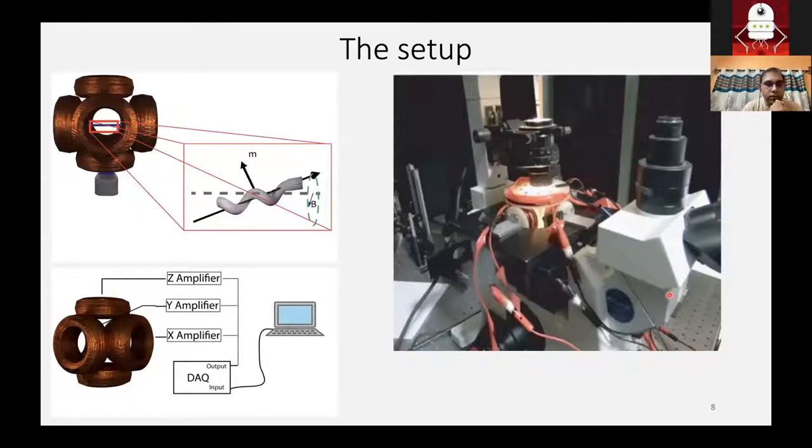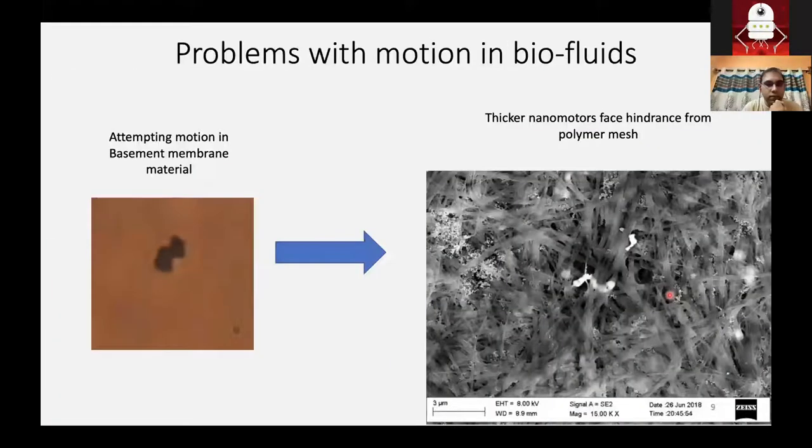With this, when we try to move nanorobots in biofluids, we face a problem. Most biofluids have a polymer mesh and our nanomotors are not very good at traversing this polymer mesh. Here's a video of a nanomotor trying to move through a basement membrane material, which I'll come to in a couple of slides. And over here is an SEM of what happens when you try to move nanorobots through collagen. It gets entangled in the mesh like an insect in a spider web, and it doesn't go anywhere.